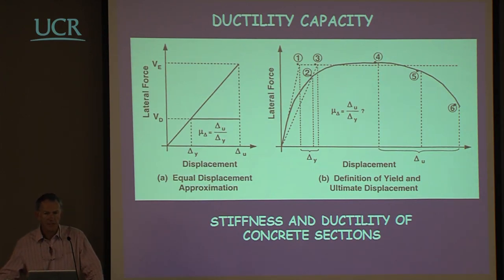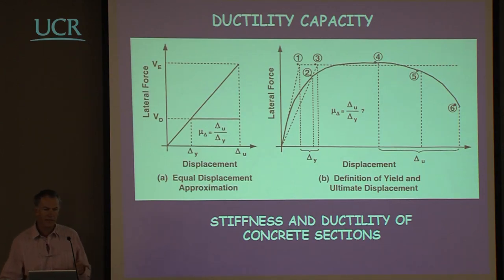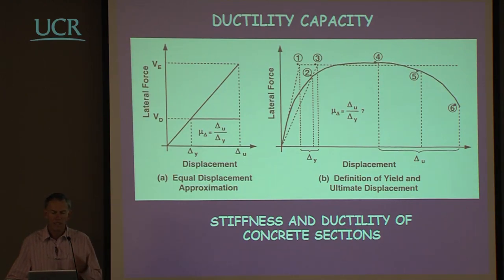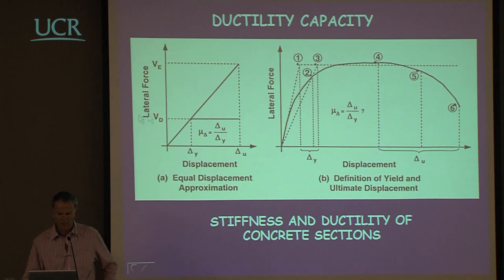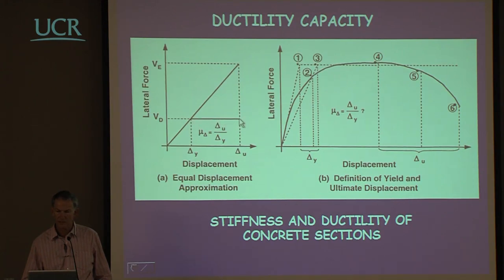There is very little agreement on what the ductility capacity of a structure is, for two reasons: people can't agree on what the yield displacement is — and even if they did, they'd get it wrong — and second, they can't agree on what the limit state displacement capacity is. In force-based design we need to know both the yield displacement and the ultimate displacement to determine ductility capacity.